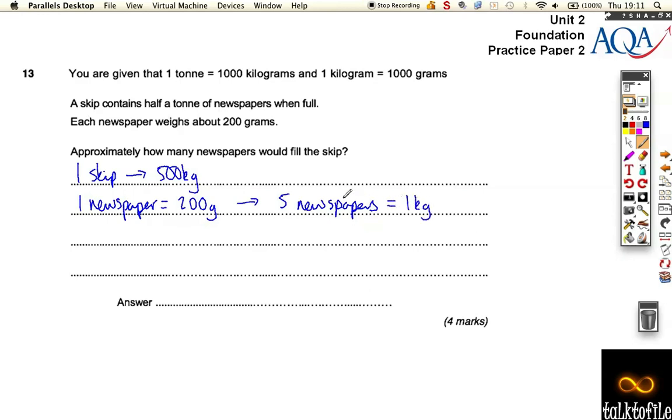So that's a really key point. We've worked out that five newspapers makes one kilogram, and we can get 500 kilograms into a skip. So the only calculation we've got to do now is spot that we've got to do 5 times 500.